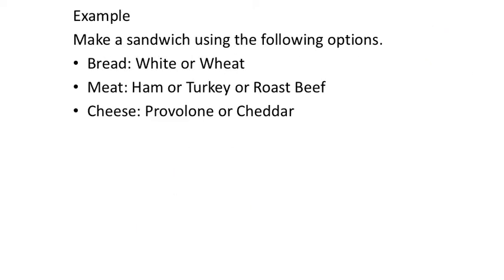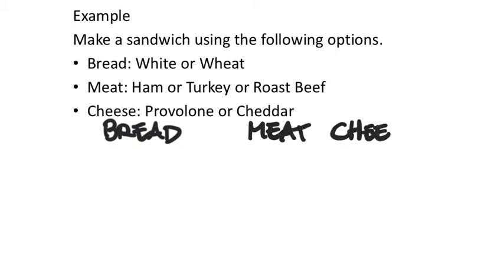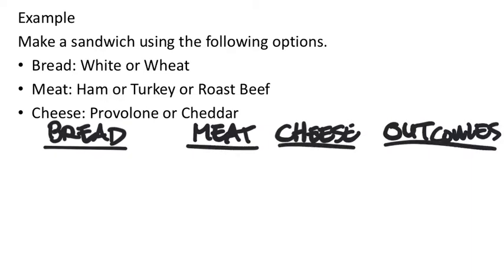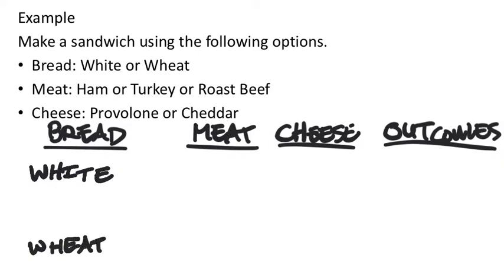Let's go ahead and make a tree diagram. It doesn't matter which one you start with. You've got bread, meat, and cheese — how is bacon not on there? In any case, we're looking at bread, and if you were to choose the sandwich randomly, you'd start the tree with bread. The two bread choices are white or wheat.